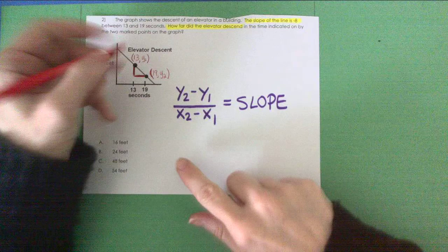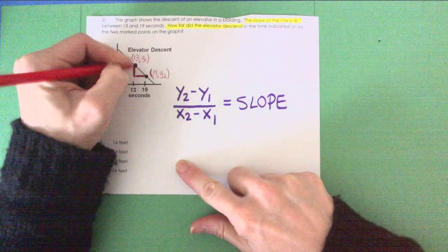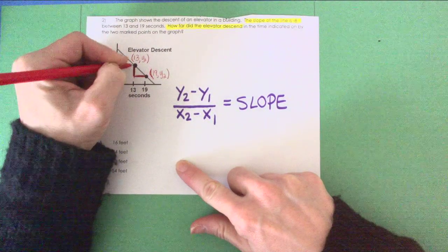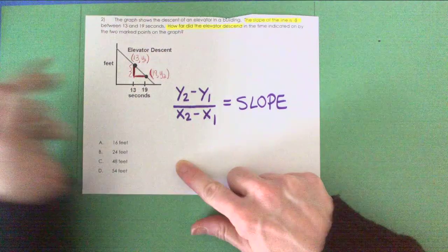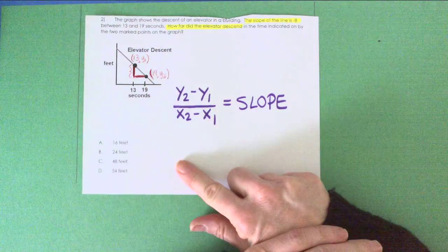The question is, how far did the elevator descend or go down in the time that's indicated by the two marked points on the graph? So really guys, this is what we're looking for right here. How far did the elevator descend over this six-second period from 13 to 19 seconds?